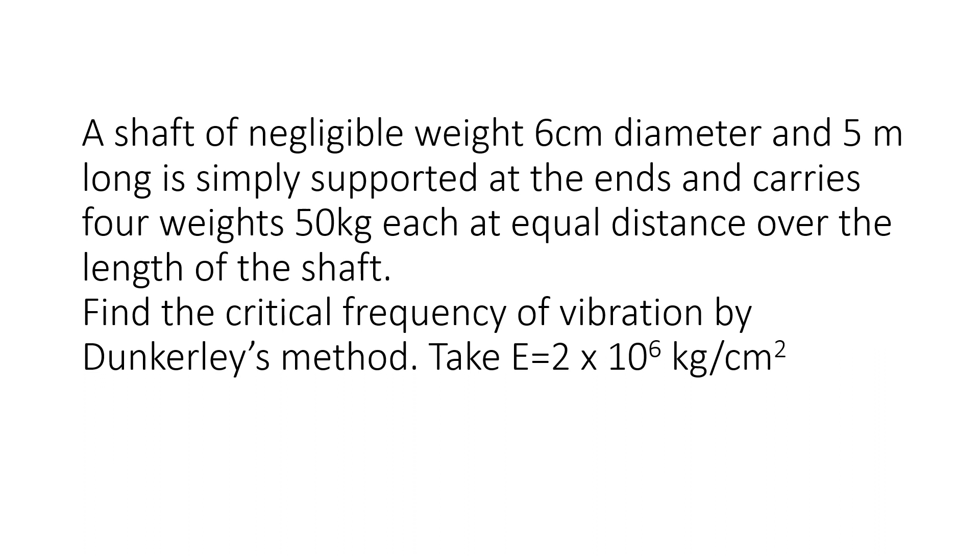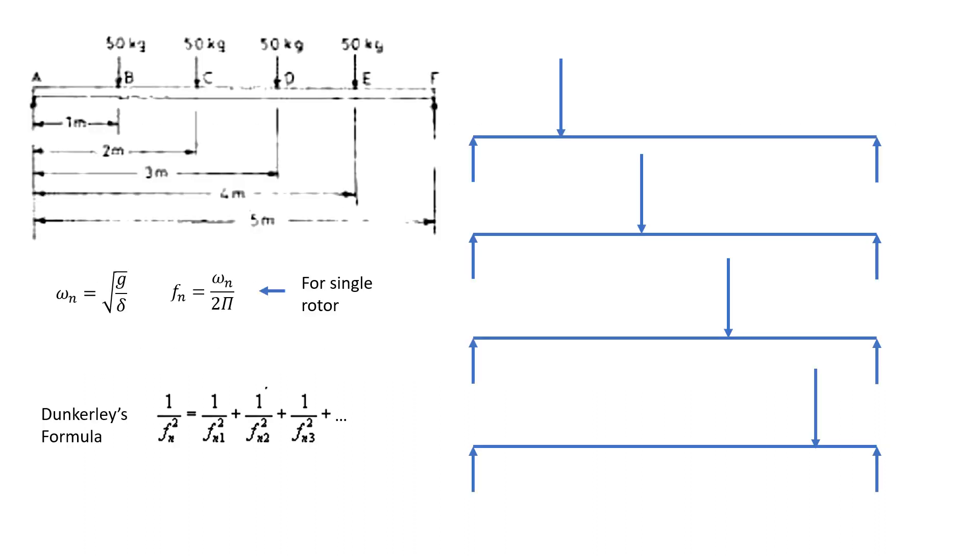The weights are 50 kg each at equal distances over the length of the shaft. Find the critical frequency of vibration by Dunkerley's method. Take E = 2 × 10^6 kg/cm². This is the numerical where we need to find the critical speed.